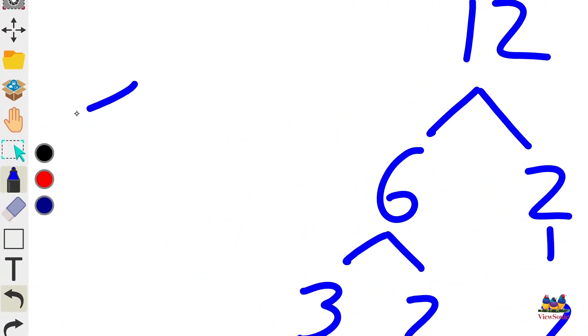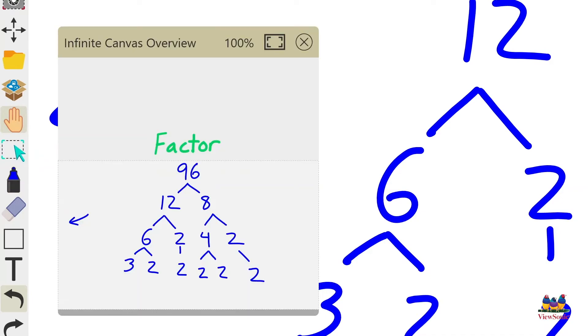If we want to see where everything's at, what you're going to do is go click on the hand twice. So you're clicking on Infinite Canvas twice, and this is going to open the overview page.